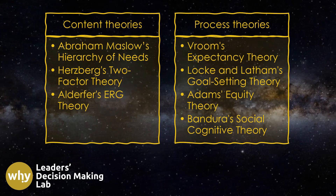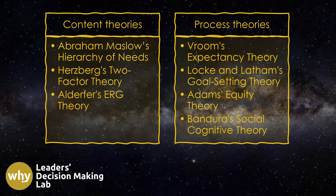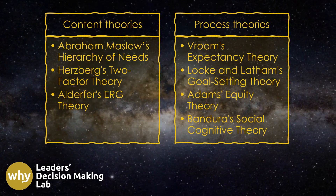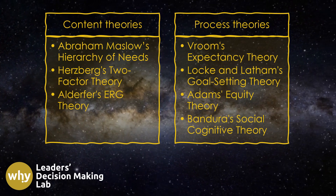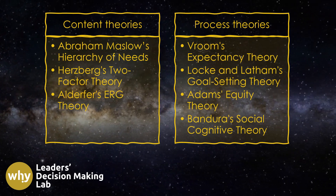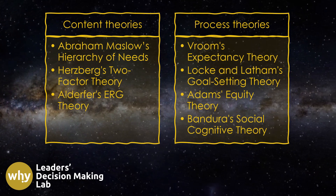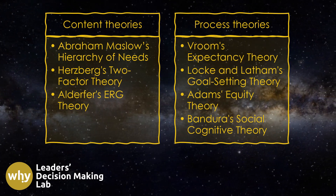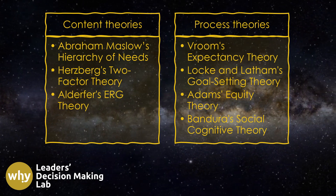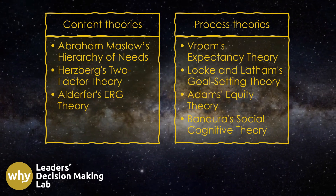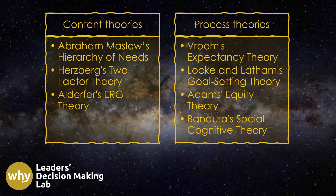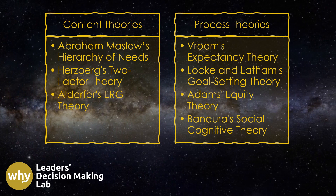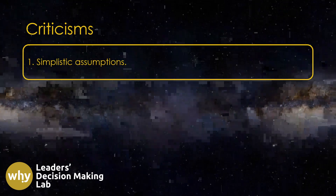Expectancy theory, unlike content theories such as Abraham Maslow's hierarchy of needs, does not directly address the motives or needs that drive human behavior. Instead, expectancy theory is often referred to as a process theory, focusing on the ways in which motives and goals influence people's actions. These two types of theories can complement one another: content theories explore the fundamental human motives, while process theories examine how these motives and corresponding goals affect individual behavior.